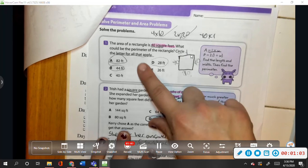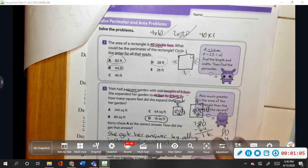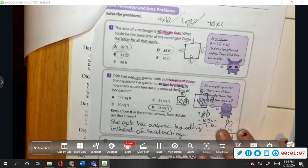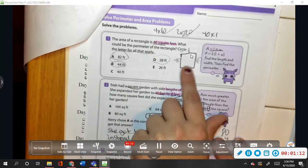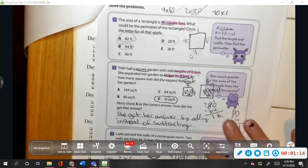This was a tricky one because you had to circle all the letters that applied. And so you had to go through the factor pairs of 40 to figure out how that was going to work.